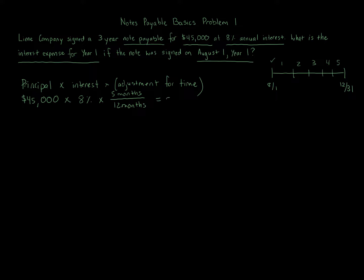Not too bad — it's just remembering the basic formula and understanding how to adjust for the time period, like August through December here. Also pay attention to what kind of item it is: note payable versus bond payable, because bonds may require amortizing discounts or premiums, which adds complexity. Keep that in mind when working through these problems.